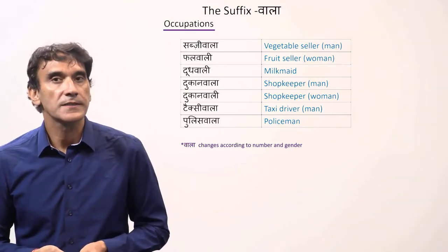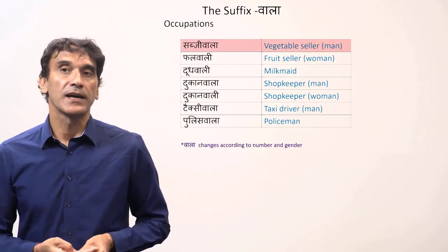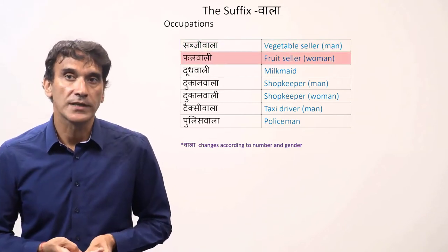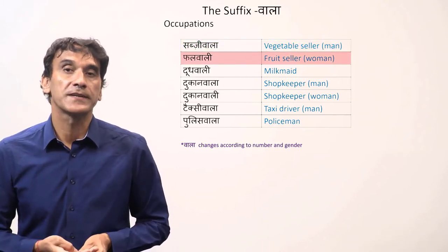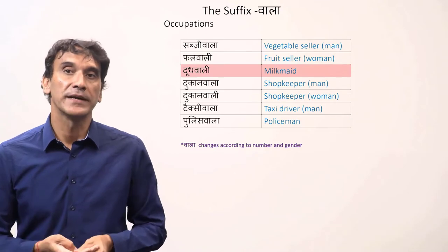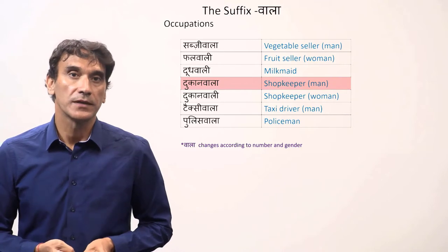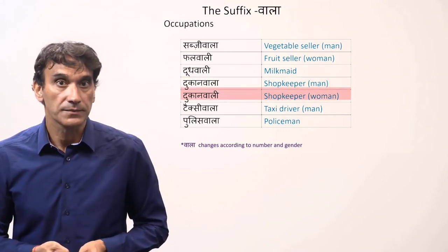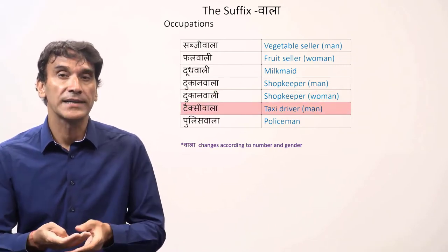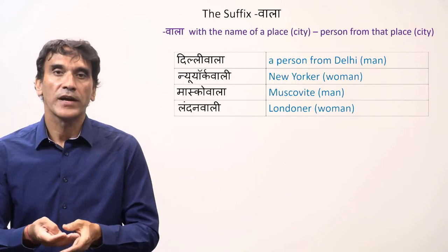Let's start with occupations. The suffix vala is added to a noun to express the profession. Sabzi vala — sabzi means vegetable, so sabzi vala means a vegetable seller. Phal wali — phal is fruit, so phal wali is a woman fruit seller. Dood wali — dood is milk, so dood wali is a milkmaid. Dukan wali — dukan is shop, so dukan wali is a woman shopkeeper. Taxi wala is a male taxi driver, and police wala is a policeman.